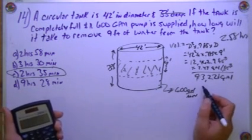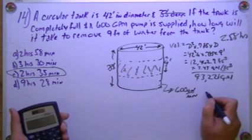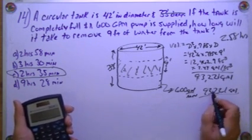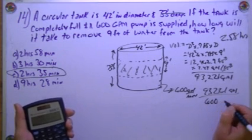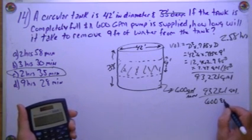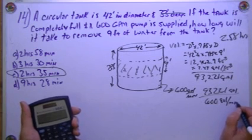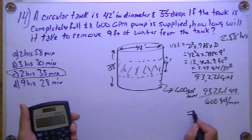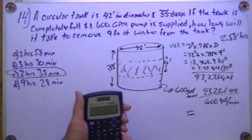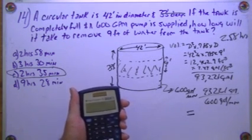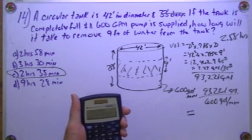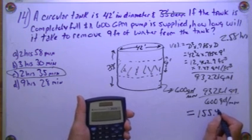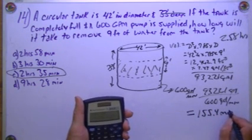But I want gallons per minute. So I'm going to take 93,221 gallons divided by 600 gallons per minute. Gallons are going to cancel out, and I'm going to get minutes. So I'm just going to divide it by 600, and I'm going to get 155.36, 155.4 minutes.